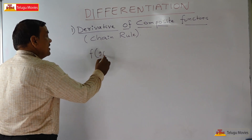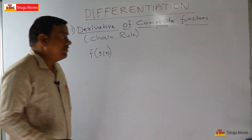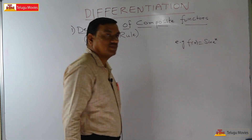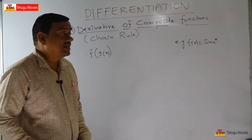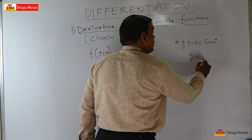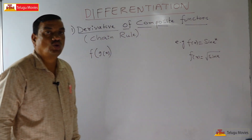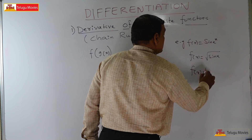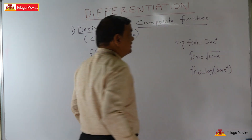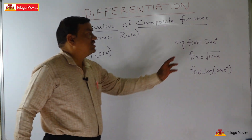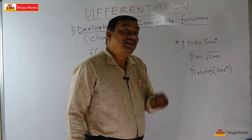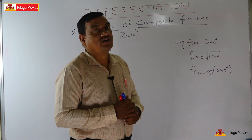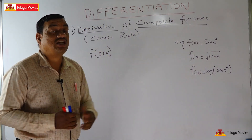For example, any function of the form f of g of x. I will show you some functions: f of x is equal to sin of e power x, f of x is equal to root of sin x, and f of x is equal to log of sin of e power x. The main function is sin x, and in place of x another function e power x is substituted. Such functions are called composite functions, f circle g of x or g circle f of x.